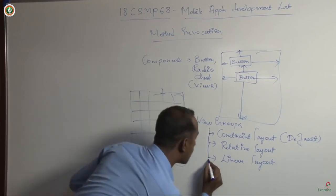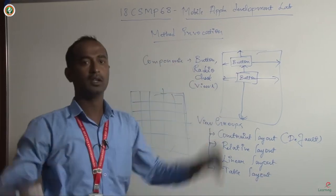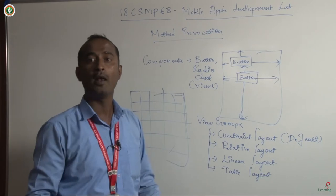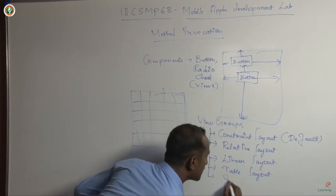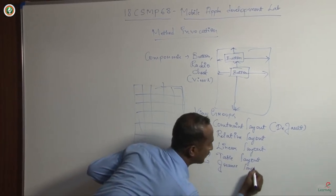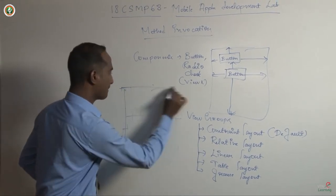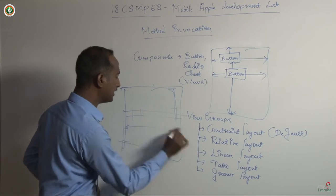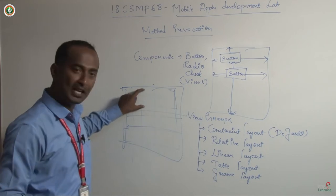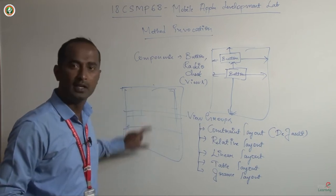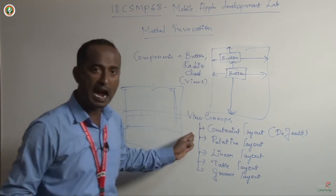Along with these three layouts, we have two more. Table layout is used when you want your application to look like a table with rows and columns. The last one is frame layout, also called fragments. If you want to divide your activity into a number of frames, you use frame layout. Each separate frame acts as a sub-activity where you can design whatever you want.